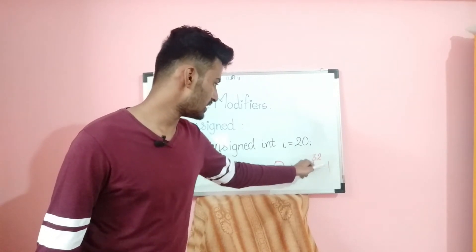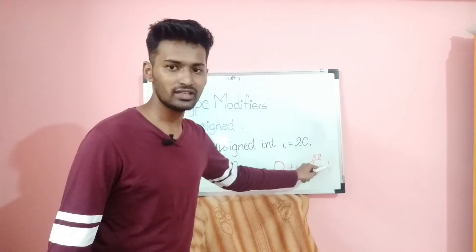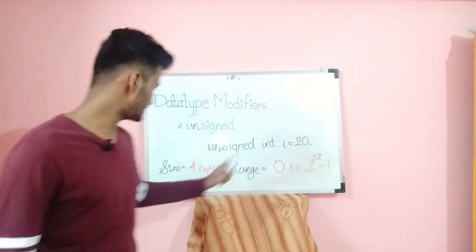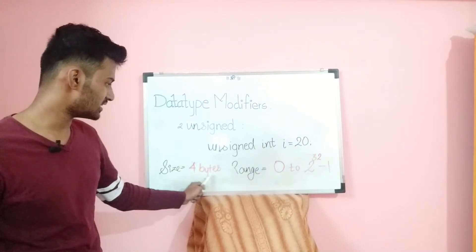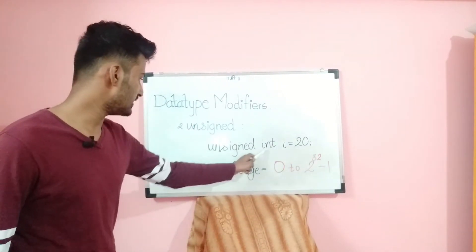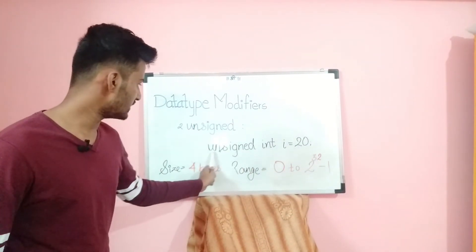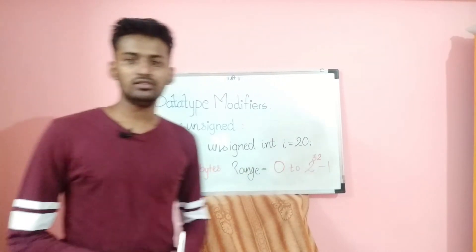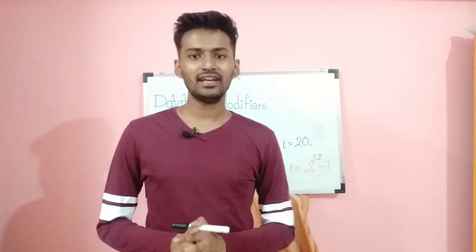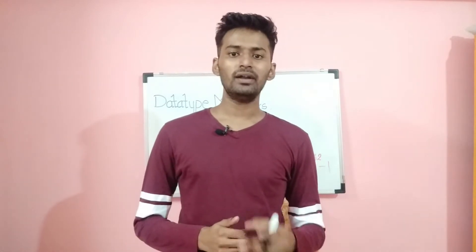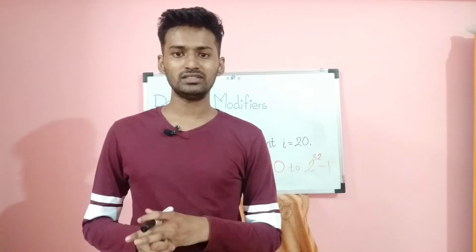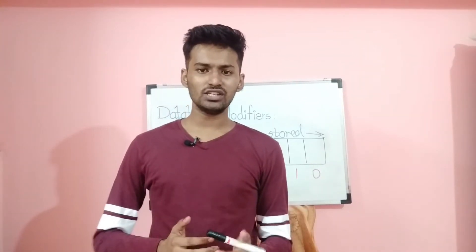With unsigned int, the positive limit nearly doubles — from 2 raised to 31 minus 1 to 2 raised to 32 minus 1 — while the size of the variable remains the same 4 bytes for an integer. Both signed and unsigned do not change the size, only the range. Signed is optional since it is the default, but unsigned is compulsory when you need to make a variable unsigned.